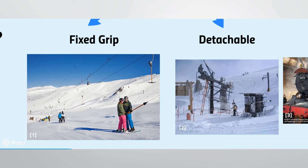Rope tows are considered a very simple form of fixed grip surface lift. Detachable surface lifts are less common, and use a detachable platter at the bottom terminal that reattaches when a rider loads. These are also known as PAMA lifts, shown in the image on the right. Most modern surface lifts have spring-loaded, retractable carriers so that there is a more gradual acceleration for the rider when they first load. Surface lifts are often a very cost-effective solution for ski resorts for uphill transportation.